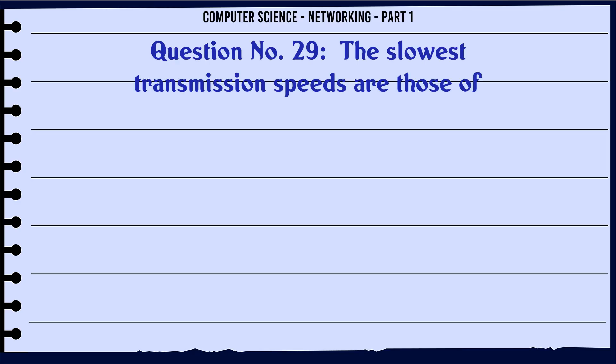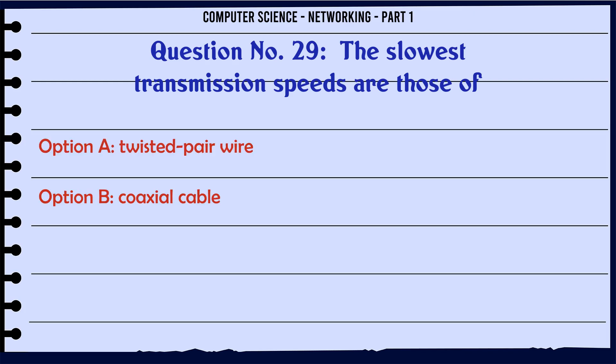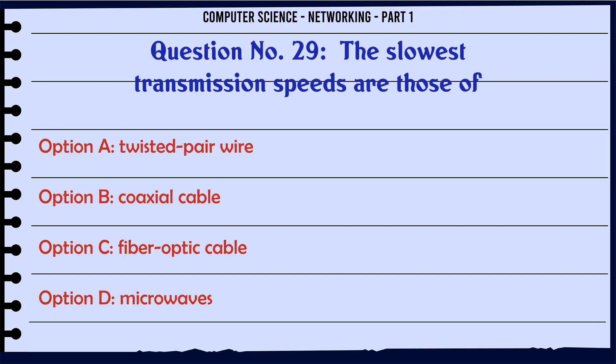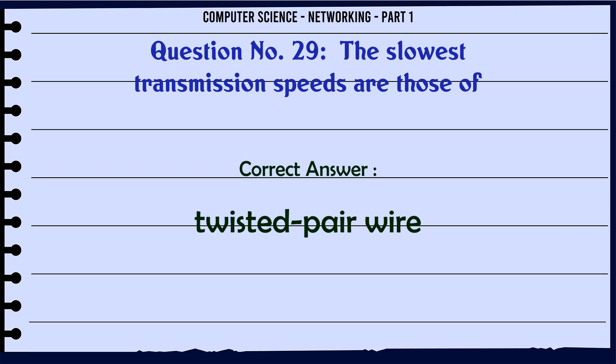The slowest transmission speeds are those of: A. Twisted pair wire. B. Coaxial cable. C. Fiber optic cable. D. Microwaves. The correct answer is: Twisted pair wire.